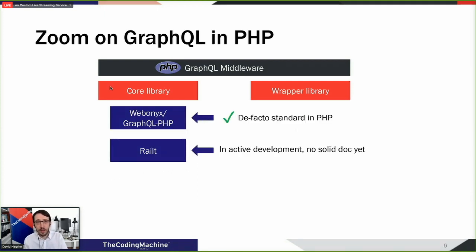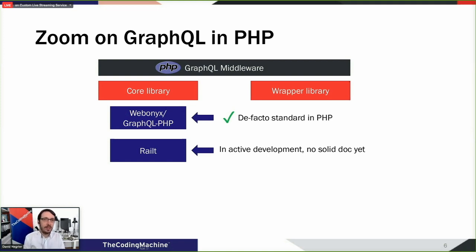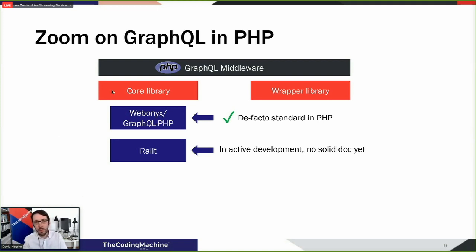In PHP, there are two core libraries right now. There is WebOnyx, which is the de facto standard — almost everybody uses it. And there is a newcomer called Realty, developed by some Russian developers, actively in development and looking promising, though it lacks solid documentation yet. If you need a core library, go with WebOnyx, but keep an eye on Realty.